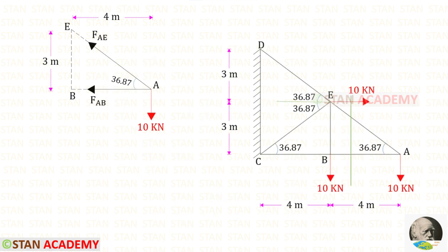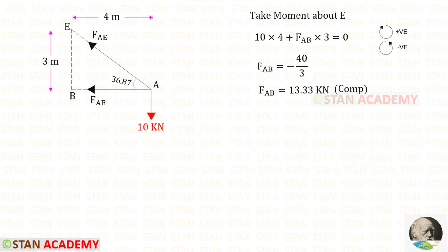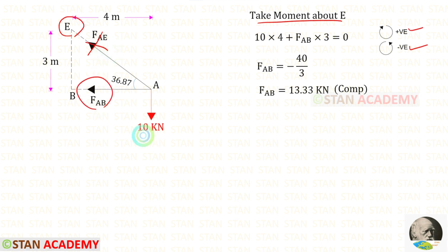Now I am going to make the first section like this and take the right side part for analysis. Let us take moment about E. Let us keep clockwise as positive and anticlockwise as negative. When we take moment about E, we should not consider FAE. The remaining forces are FAB and 10.